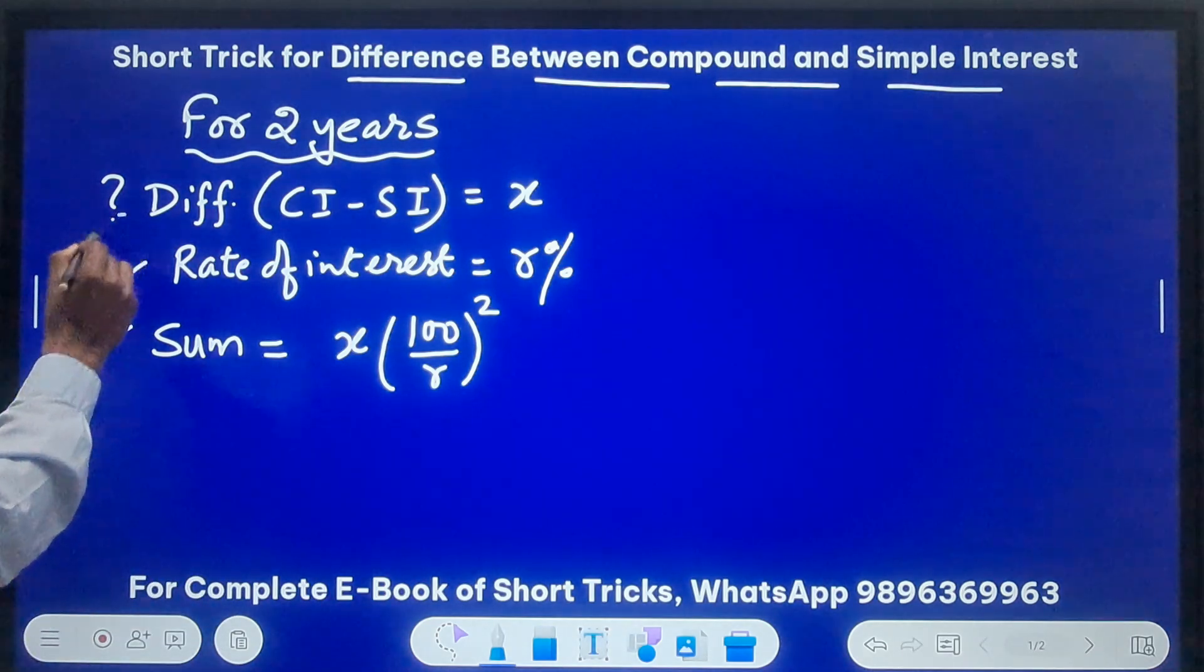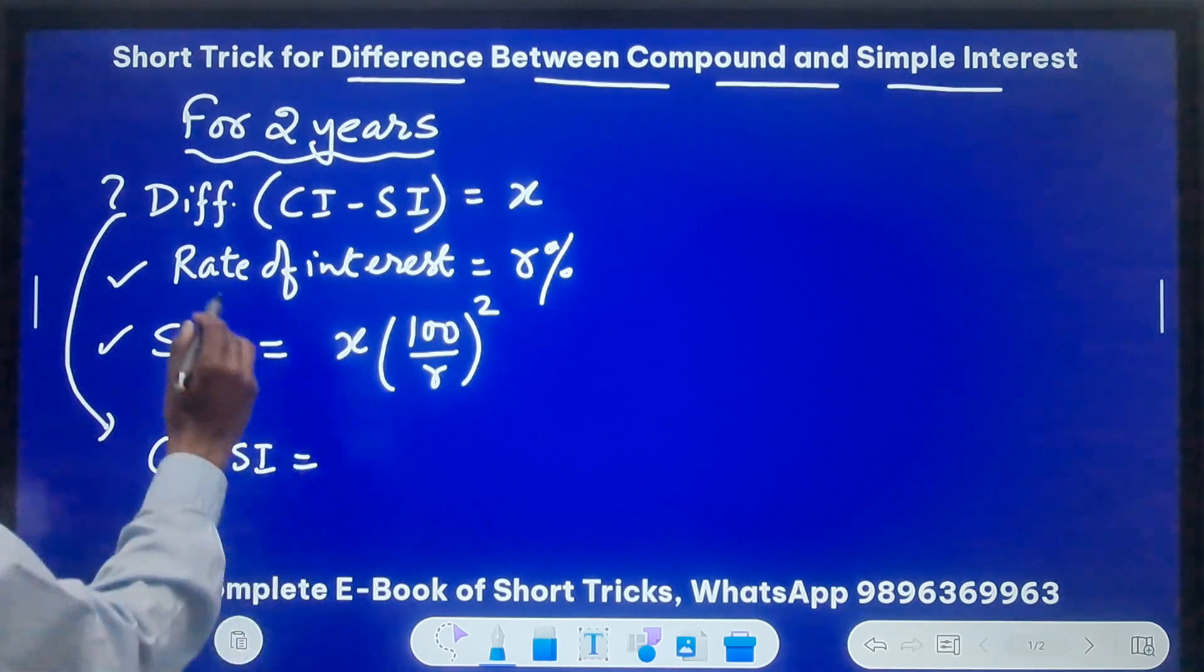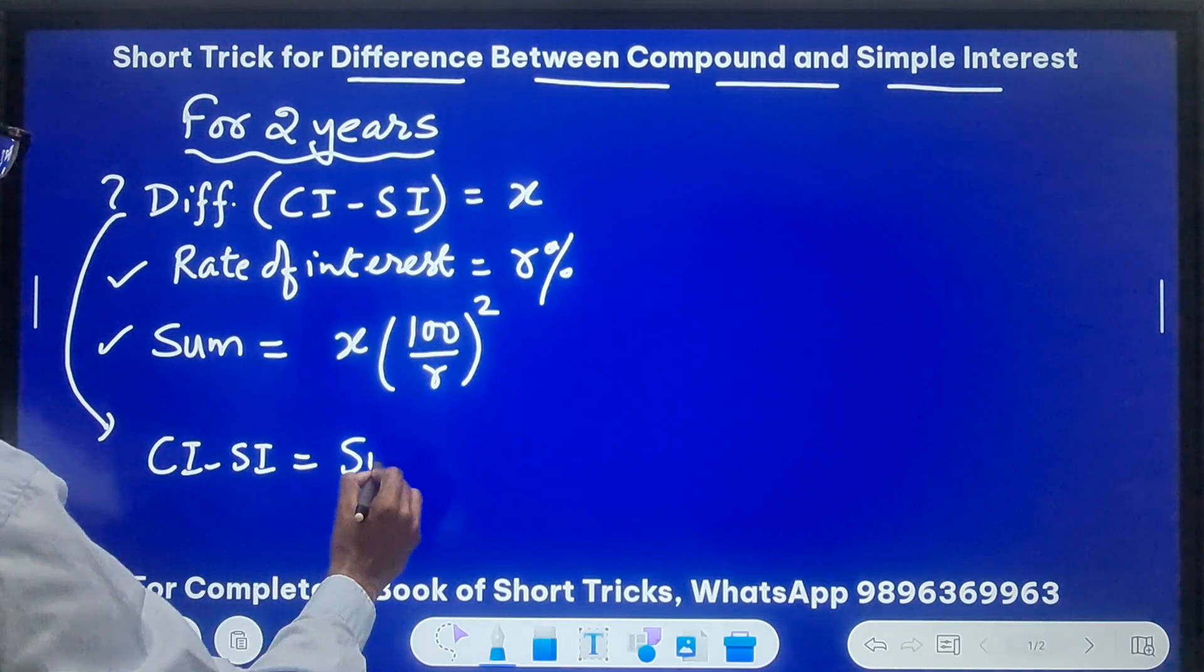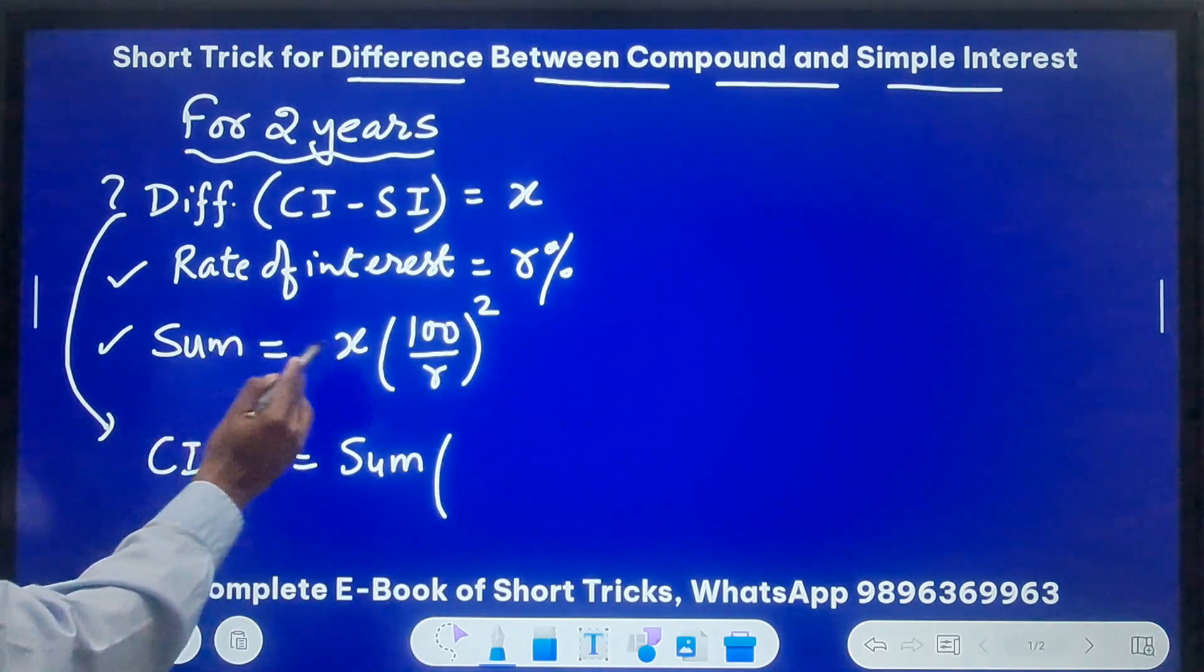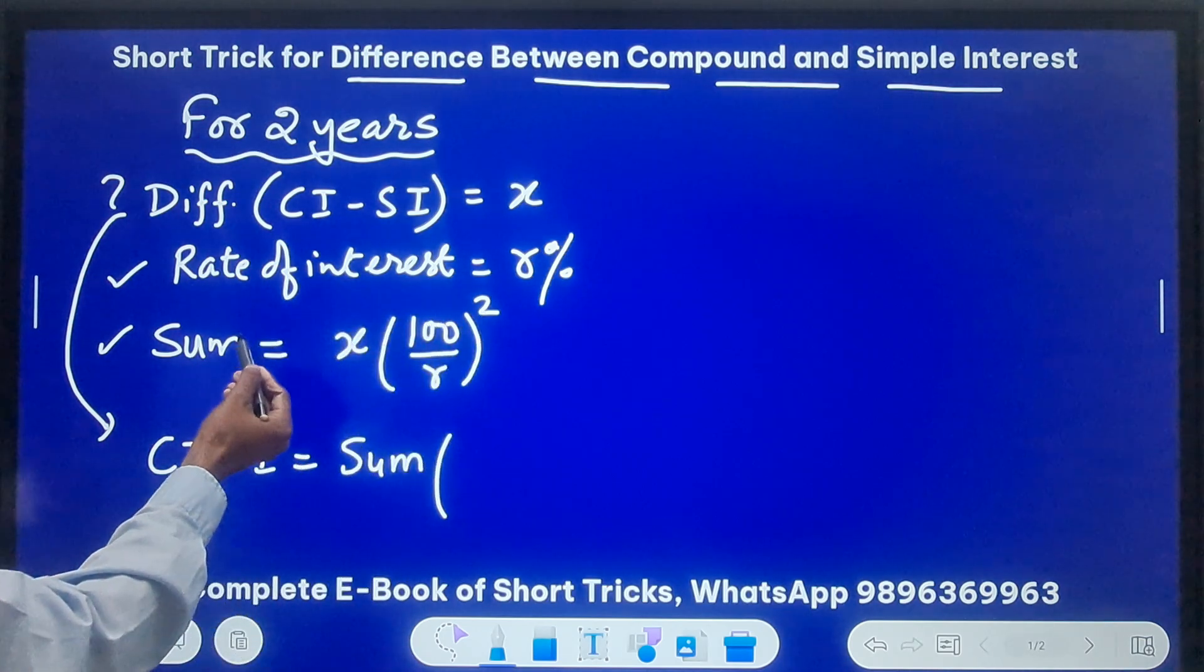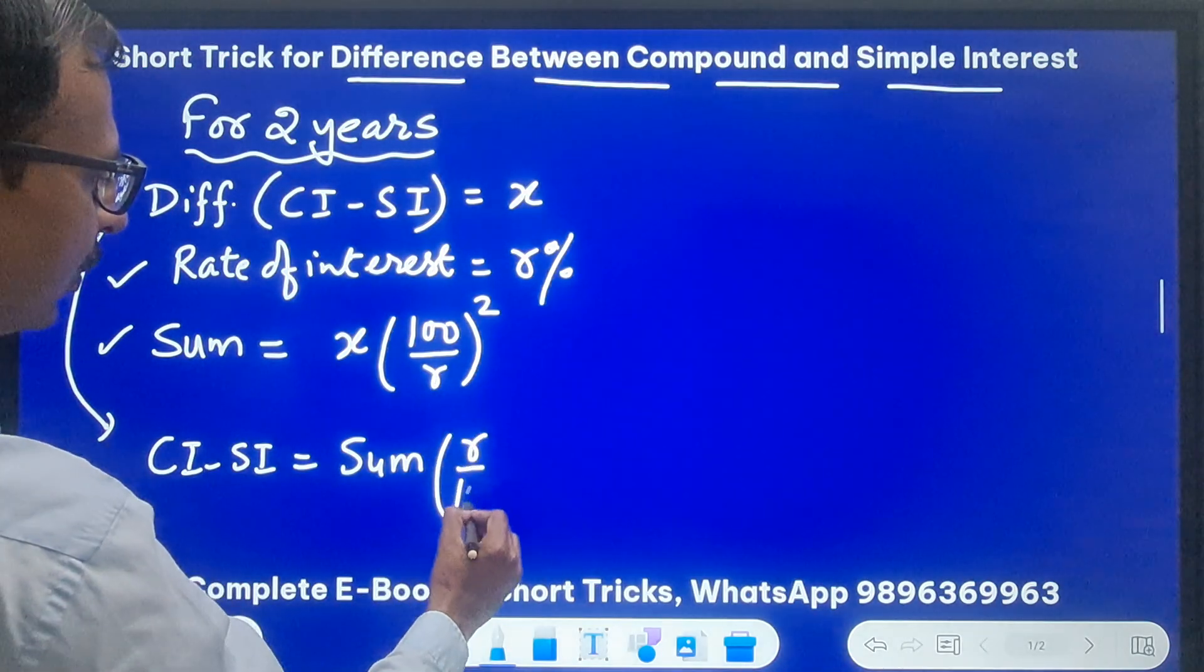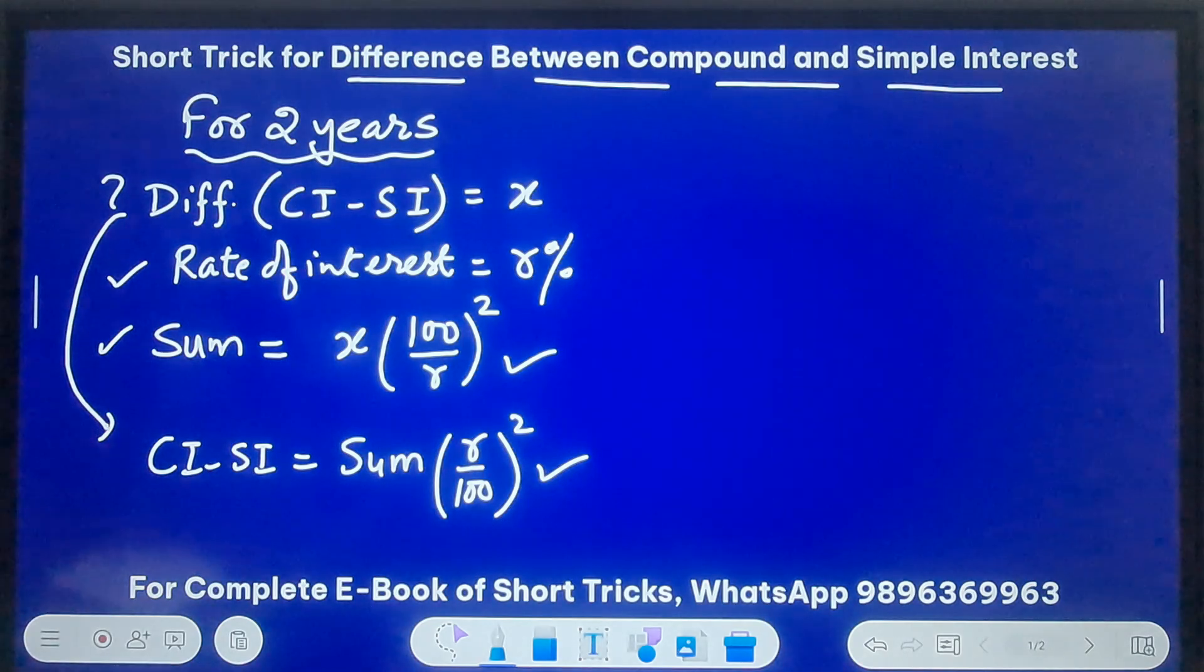Now suppose you are asked to find the difference, that means CI minus SI, given the sum and the rate of interest. In that case, you do the sum times - so we can actually derive it from here only, the difference is X, right. So if you want to find X, this 100 upon R of whole square we move to the other side. So sum times R upon 100 whole square, and now these two are going to form the base of this particular trick.